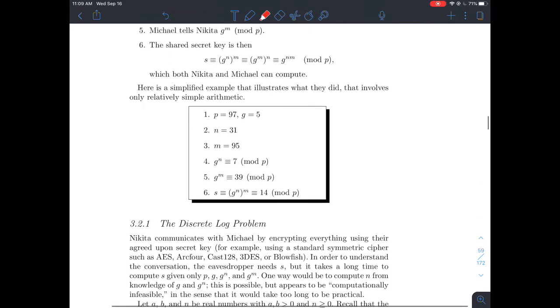And in this example here, they just kind of do the same things with the same N, M, P, and G as before. So when we take 5 to the 31st power and reduce it mod 97, you get 7. And so what Nikita is going to do, Nikita is going to send 7 to Michael. He's going to take that and raise it to the 95th, and he should get 14. That's the secret key. Similarly, Michael is going to send Nikita 39 mod P. She's going to take that and raise it to her key, 31, and she should get 14 also. So again, they both have the secret key, the shared secret key of 14.